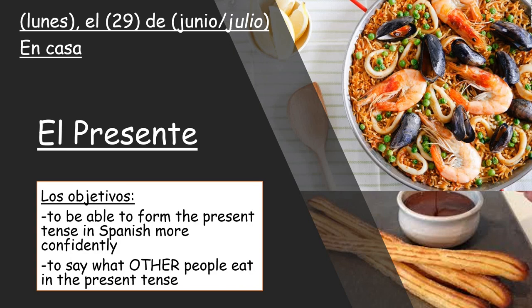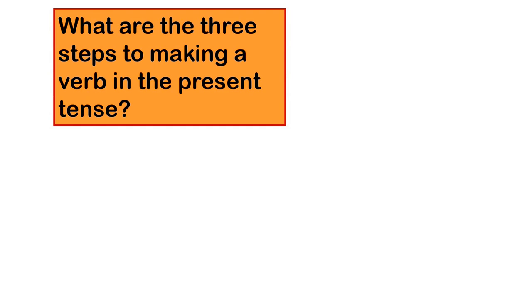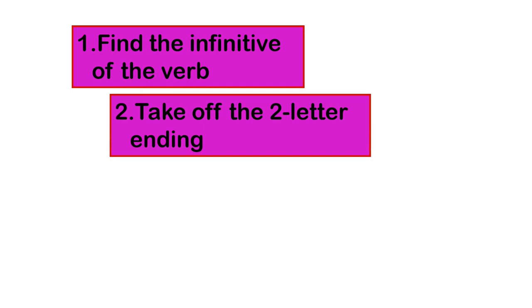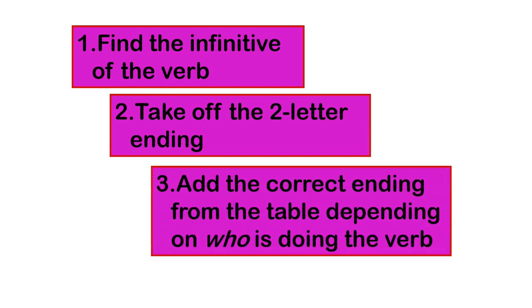So let's just do a quick recap. What are the three steps to making a verb in the present tense? I want to take any infinitive of the verb - in other words, the verb that ends in AR, ER or IR - take off that last two-letter ending and add the correct ending from the table that we know to say who's doing the verb.